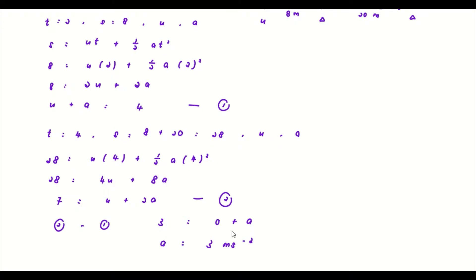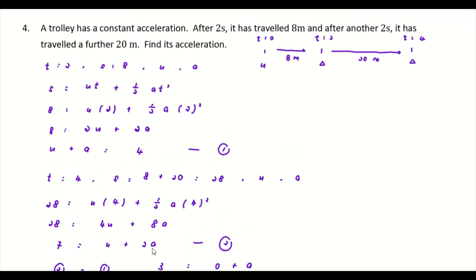The acceleration of the trolley is 3 m/s². You could also solve for u as a further check. The key idea in this type of question is to identify a common variable — here the initial velocity u at t = 0 — so that two equations share the same unknowns and can be solved simultaneously.